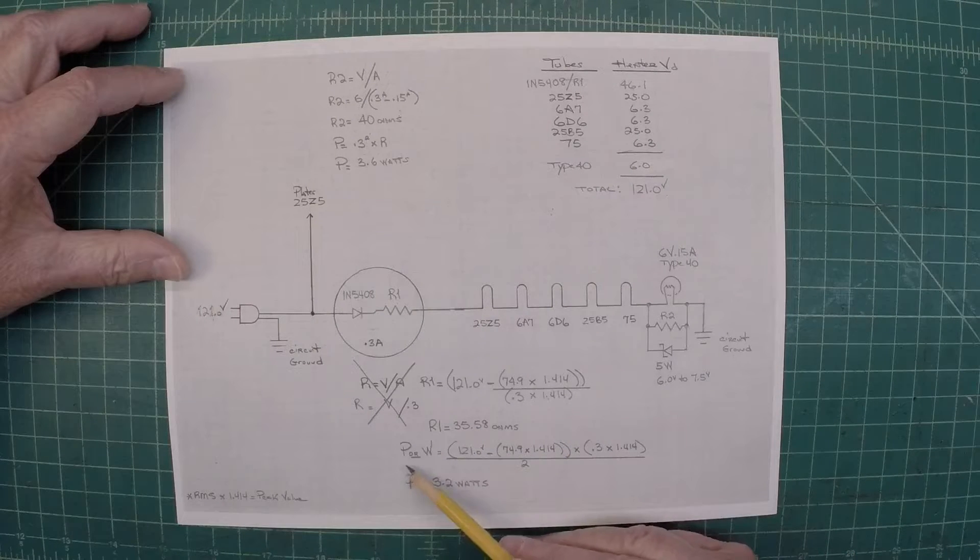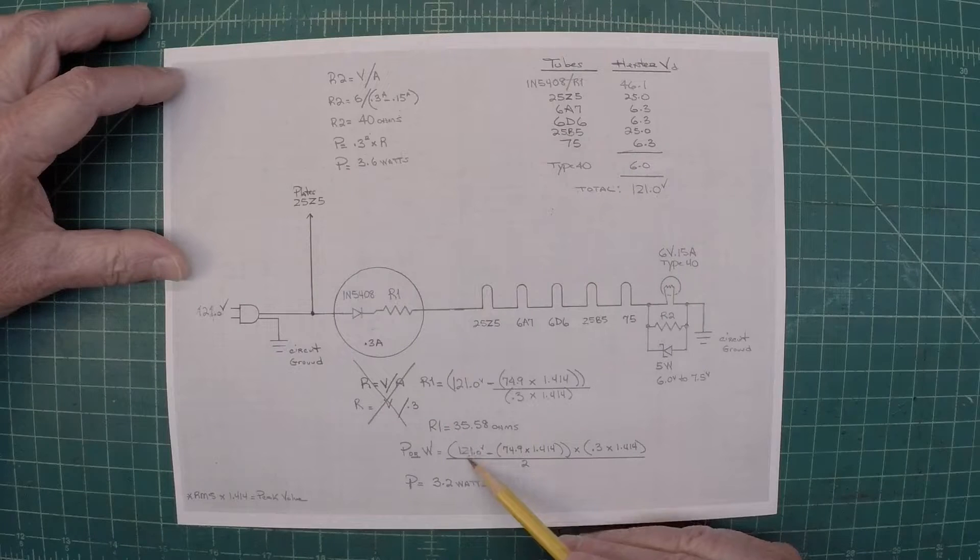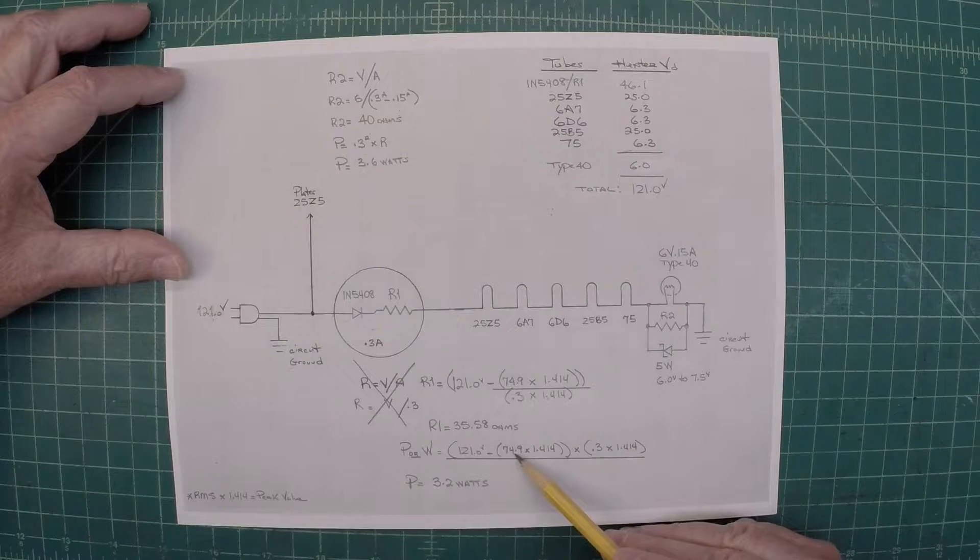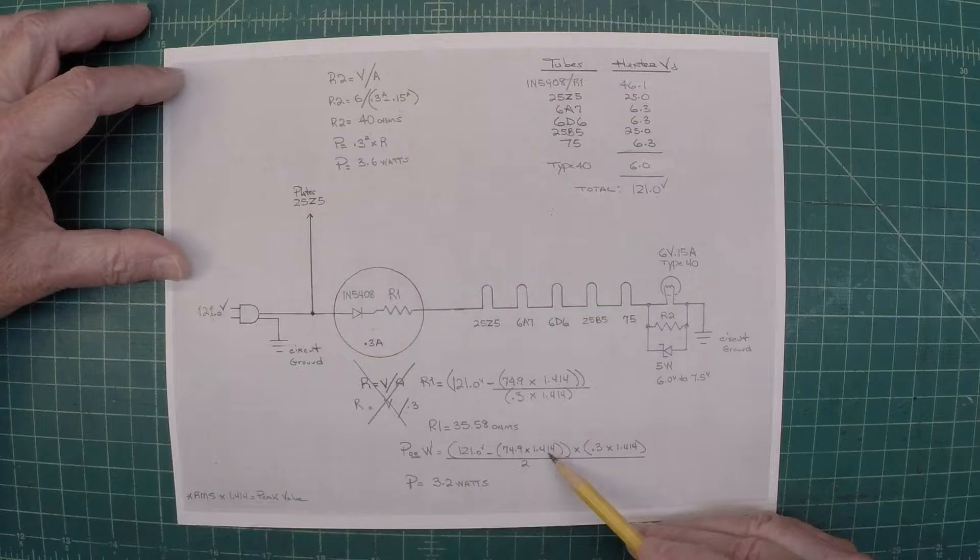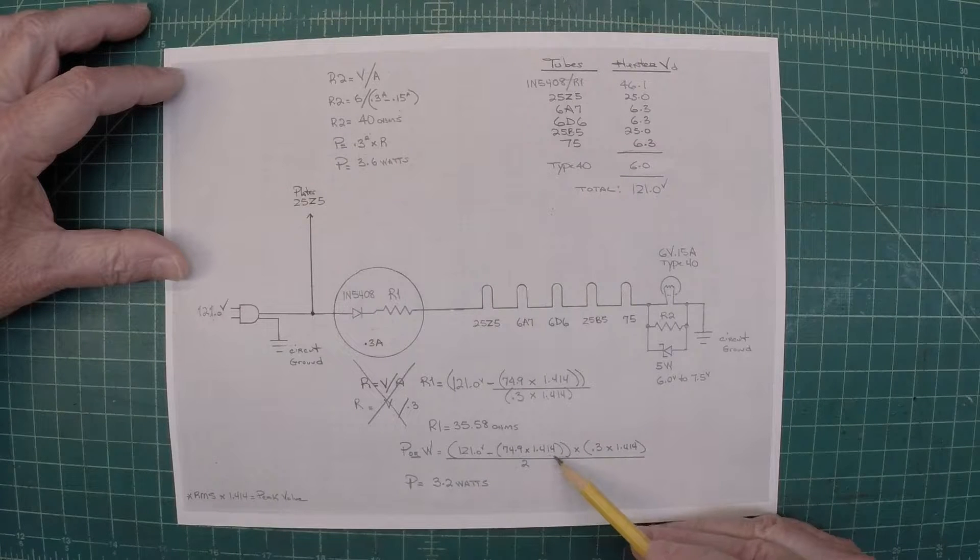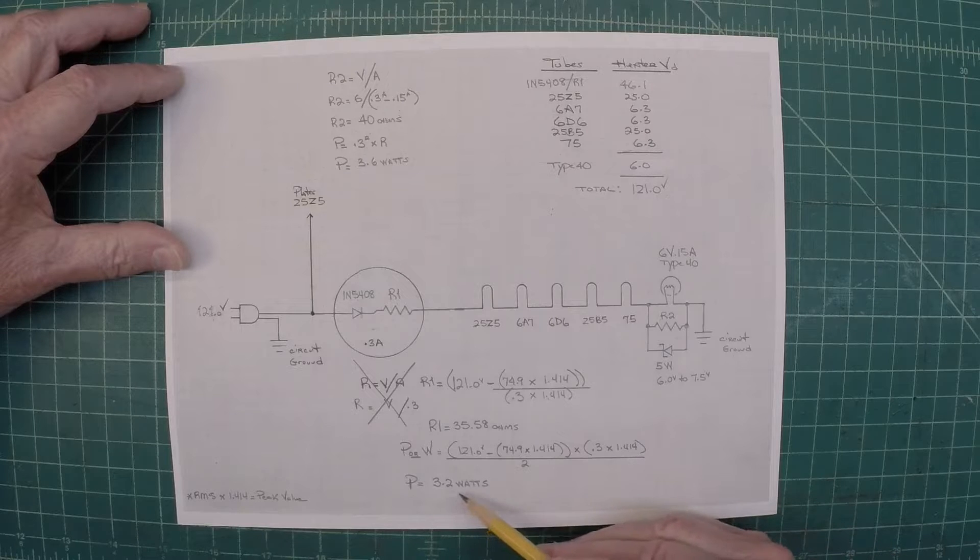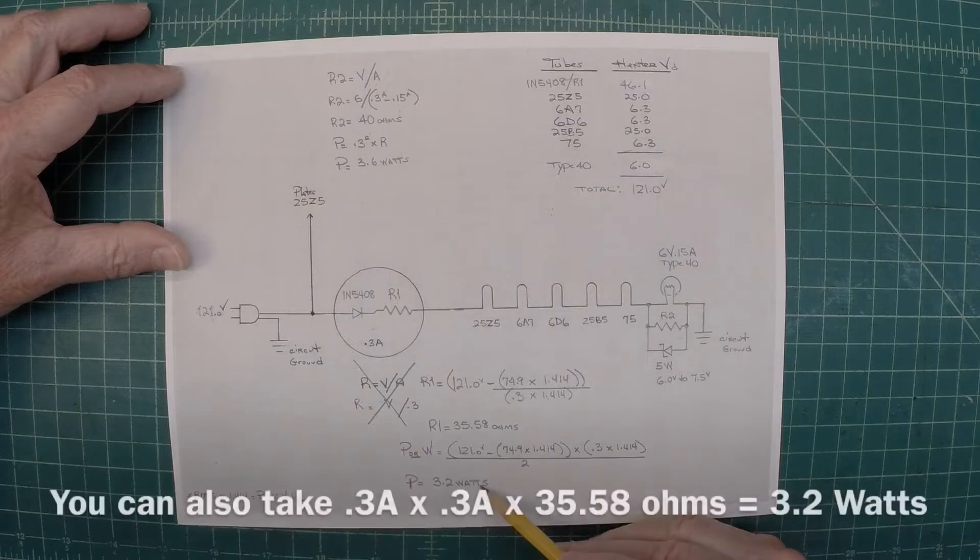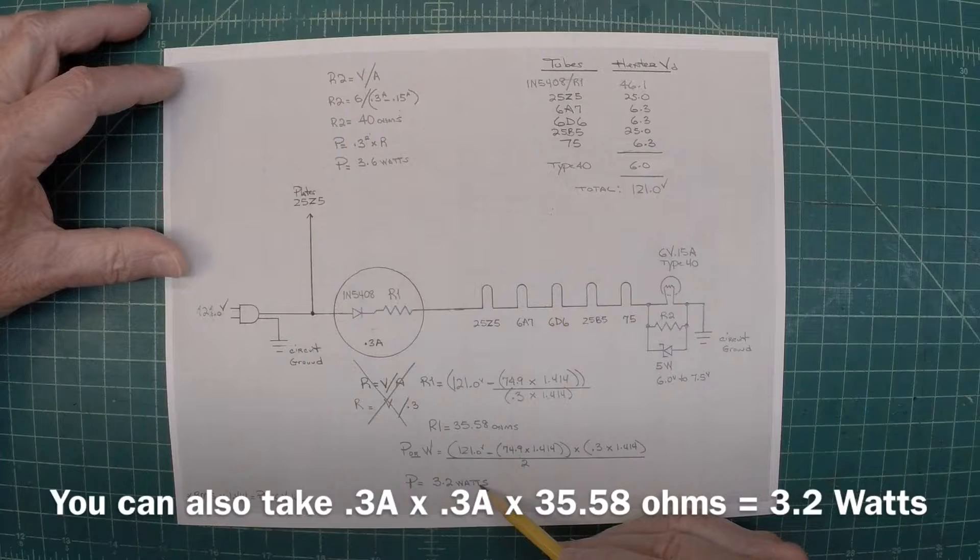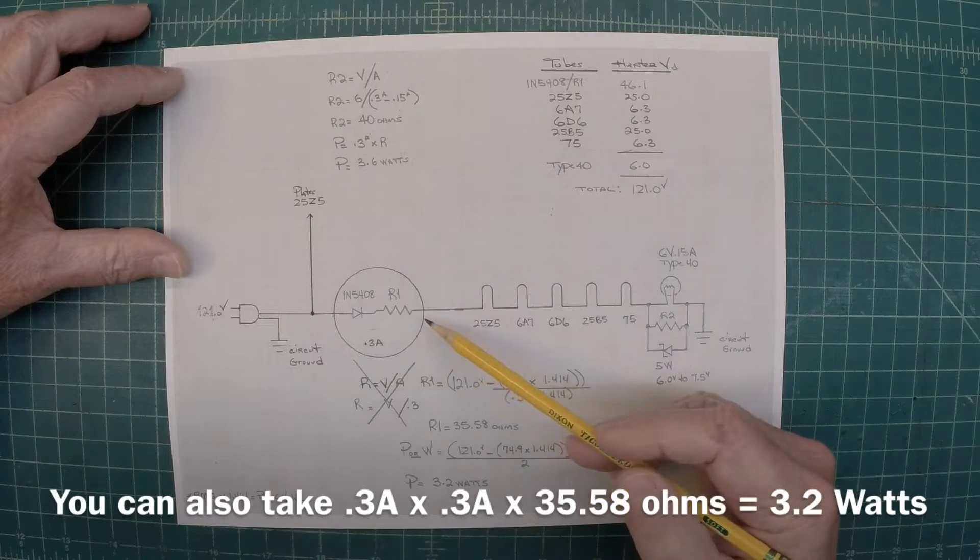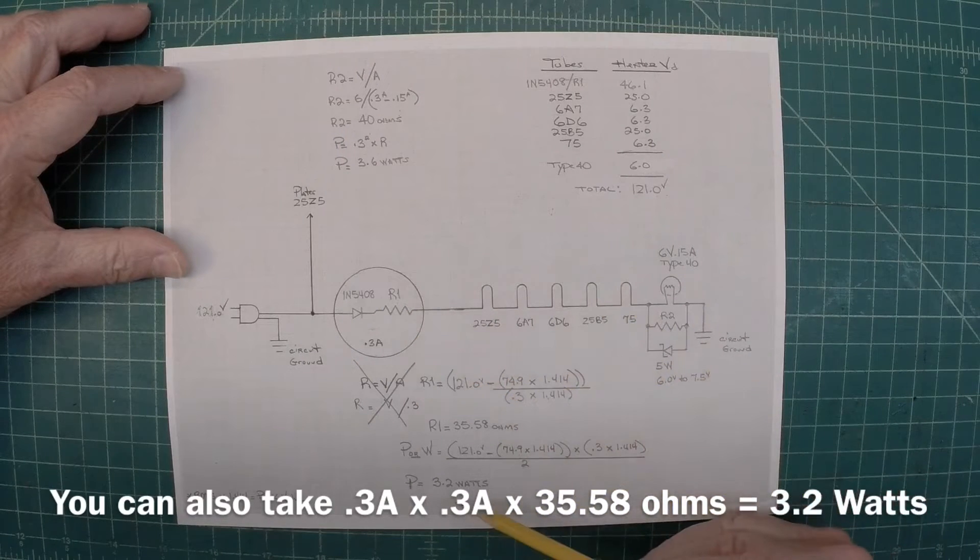So for the power wattage here, I'm just taking my line input voltage again minus the 74.9 times the 1.414 times the current as well divided by 2. And that gives us the wattage dissipation needed for R1 as well, 3.2 watts.